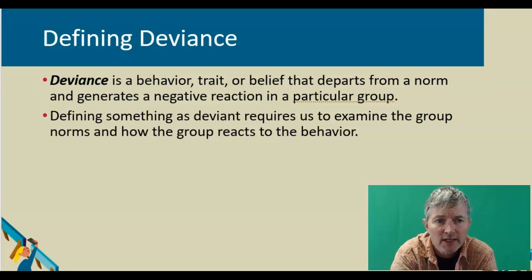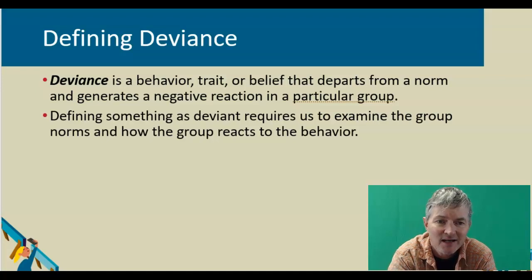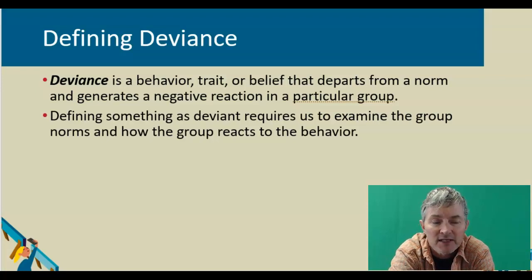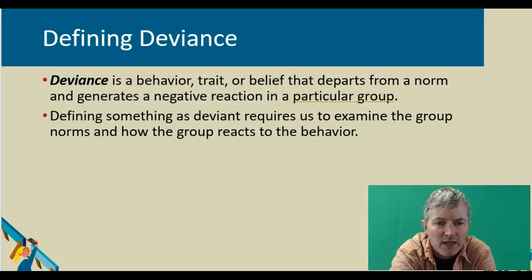Deviance is a behavior, trait, or belief that departs from a norm and generates a negative reaction in a particular group. Deviance isn't necessarily bad — it's just different from what the group considers to be normal. For instance, a woman having a size 13 shoe isn't bad, but it's definitely different. So it might elicit a reaction from the group that makes up the majority, those with smaller feet, and then we label that term deviant. And of course that's making a social judgment, not a moral one.